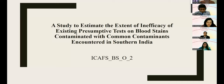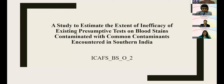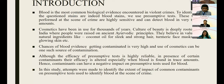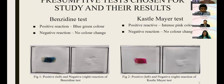Good afternoon everyone. This study estimates the extent of inefficacy of presumptive tests on blood stains contaminated with common contaminants encountered in southern India. Presenter code is ICAFS_BS02. Blood is the most common biological evidence in violent crimes and presumptive tests are used to identify it due to their high sensitivity. However, chances of blood getting contaminated are high — for instance, criminals are now sprinkling chili powder to avoid detection by sniffer dogs. Cosmetics, predominantly used in India, can also be a source of contamination. This study attempts to identify the extent of impact of common contaminants on presumptive tests — benzidine and Kastle-Meyer — used to identify blood at the crime scene.